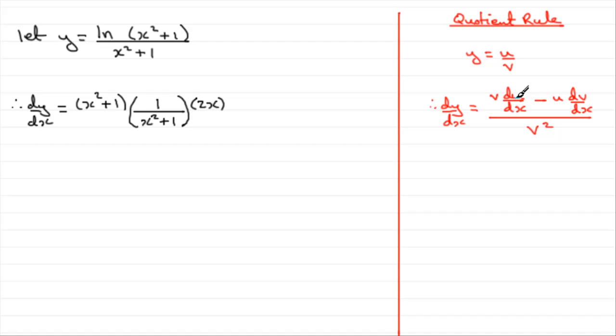So we've got the bottom times differential top. Now we have minus top times differential of the bottom. So the top which is the natural log of x squared plus 1, I'm going to put that in brackets. I'll always put everything in brackets otherwise you're likely to get ambiguous statements. So it's top u times differential of the bottom. Differential of the bottom is just going to be 2x. And all this is divided by the denominator squared. All over the bottom x squared plus 1 and that's all squared.